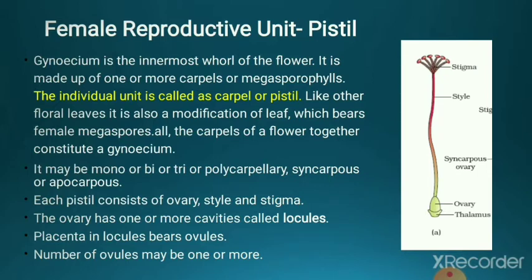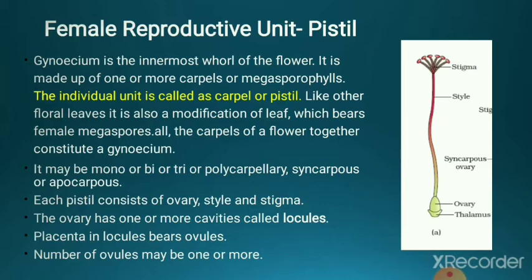A single carpel consists of three parts: stigma, style, and ovary. The stigma is the uppermost broad receptive part which receives pollen grains during pollination and helps in sexual reproduction. The style is the long tubular structure which provides passage for transfer of pollen grains or male gametes from stigma to ovary. The basal swollen portion attached to the thalamus is called the ovary, which is the main reproductive part of the female reproductive system in angiospermic plants.